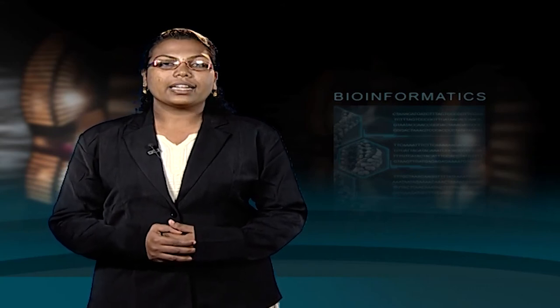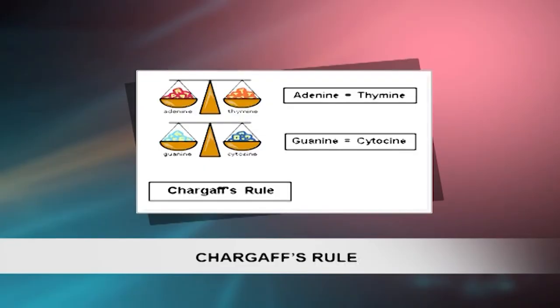In 1950, Chargaff pioneered the paper chromatography of nucleic acids to determine how much of each component nucleotide was contained in a DNA sample. Each species differed in the amounts of adenine, cytosine, guanine, and thymine, but within a species the proportions are identical regardless of which tissue the DNA is extracted from. Chargaff further discovered that the proportion of adenine was always equal to the proportion of thymine, and the amount of guanine always corresponded to cytosine — Chargaff's ratios. The figure on screen represents this rule: adenine equals thymine, and guanine equals cytosine.